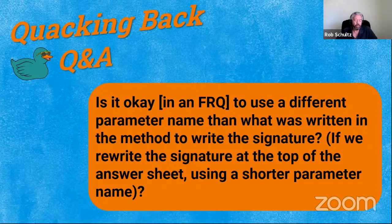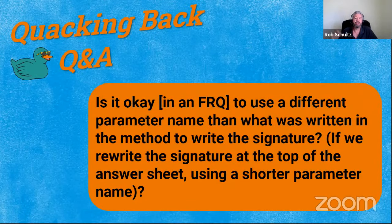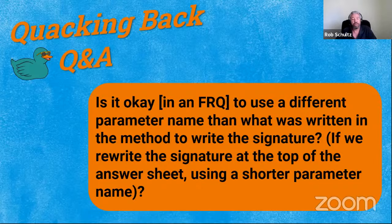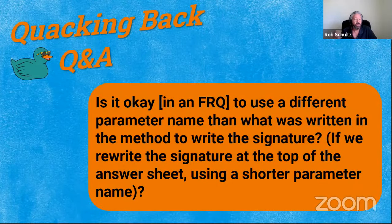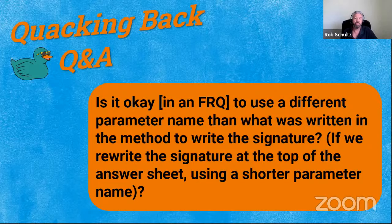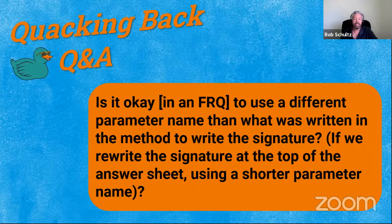Questions one, three, and four typically give you a class definition where method names, parameters, and return types are already written out — if that's the case, you have to use what's written, you can't change it. Anything pre-written in the problem description you must use as-is. But if it's question two, where you're writing a class from top to bottom, it doesn't really matter what you call the specific parameters as long as it's not stated in the problem description.